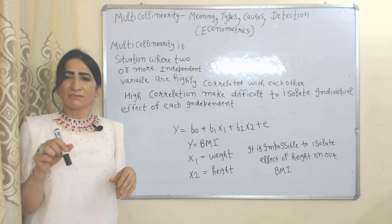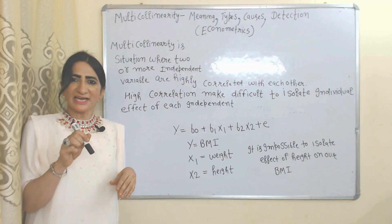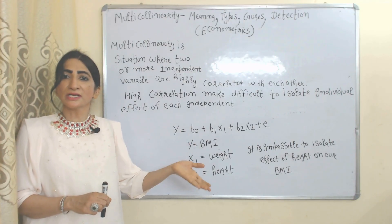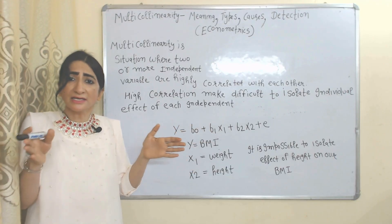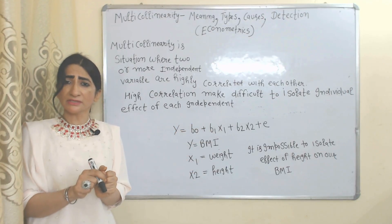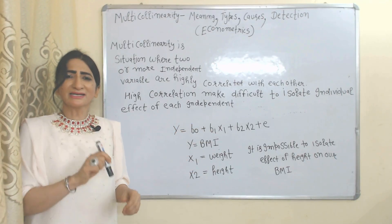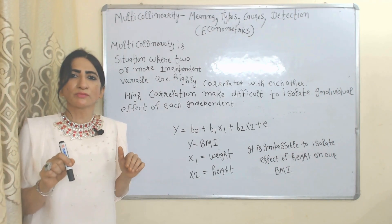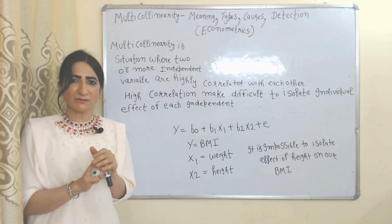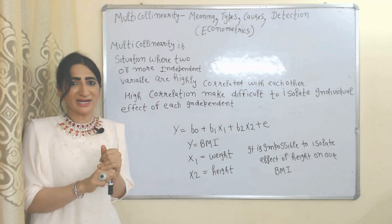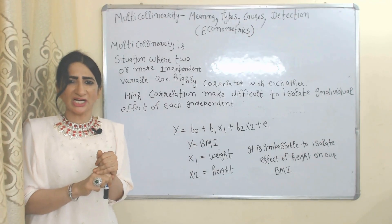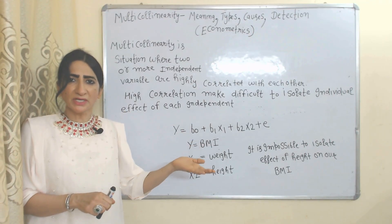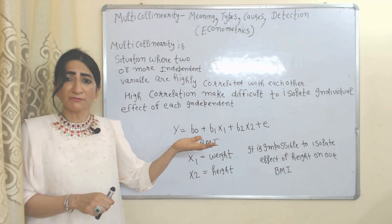Multicollinearity is the situation where two or more independent variables are highly correlated with each other. High correlation between independent variables makes it difficult to isolate the individual effect of each independent variable.